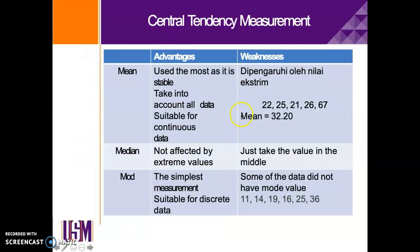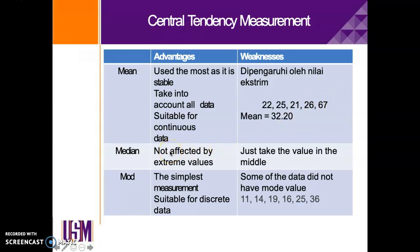What are the advantages and weaknesses of mean, median, and mode? For mean, the advantages are that it is the most used measure, it is stable, it takes into account all data, and it is suitable for continuous data. The weakness is that it is influenced by extreme values. For example, with scores 22, 25, 21, 26, and 67 — while 22, 25, 21, and 26 are close in value, 67 is an extreme value. Including it gives a mean of 32.2, which is a weakness of mean.